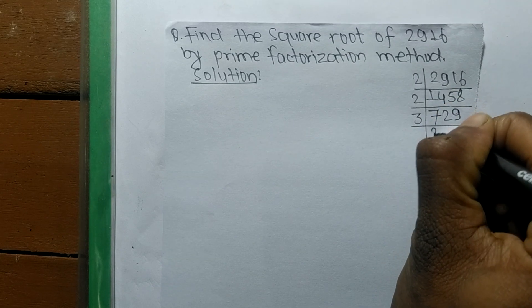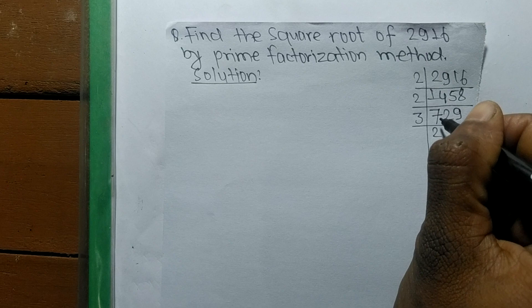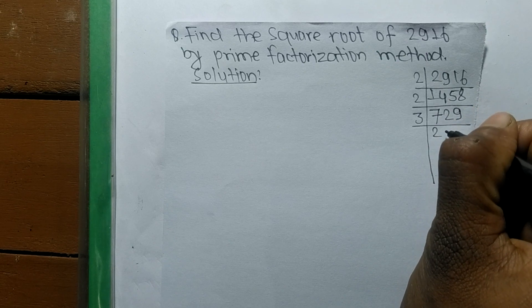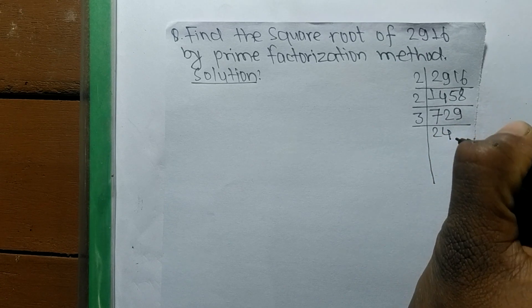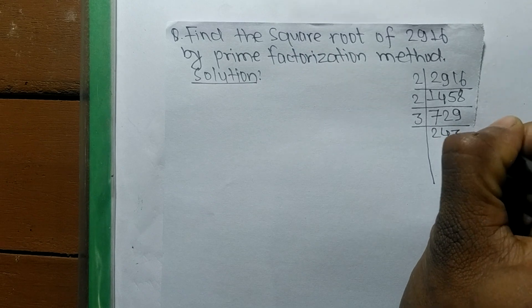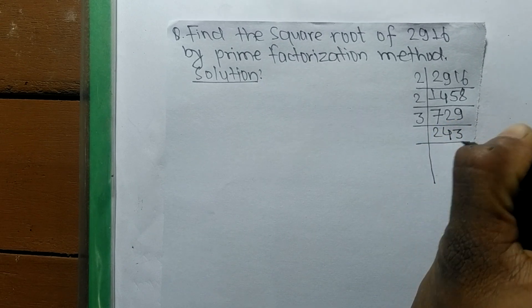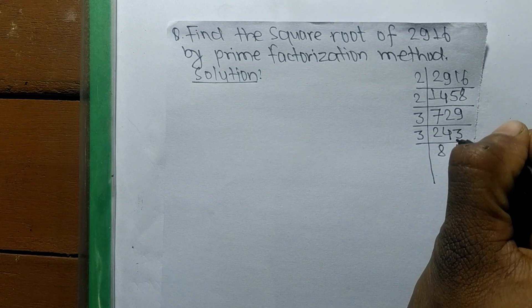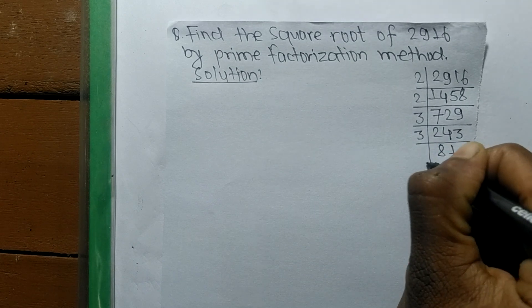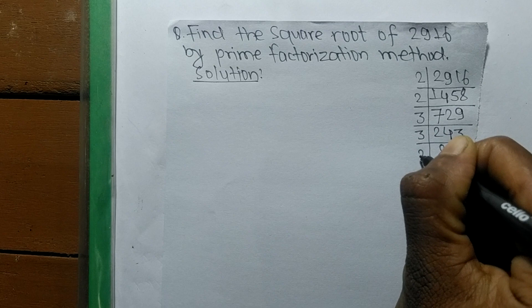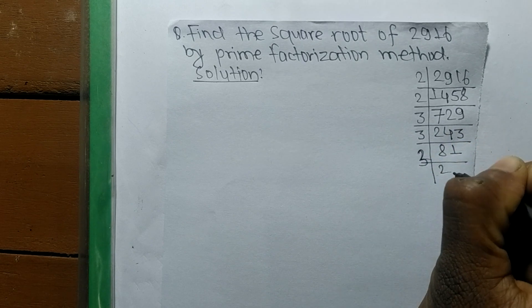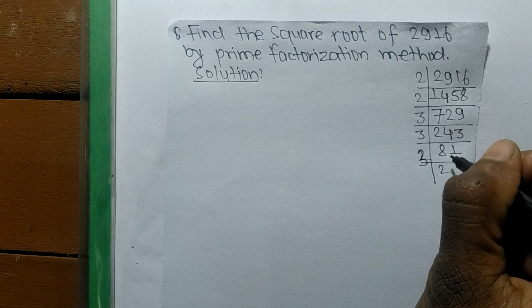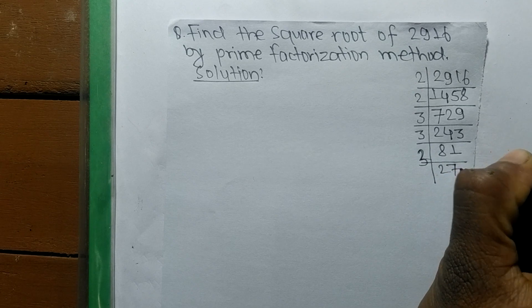So now it is divided by 3. 3 times 2 means 6, remaining is 1, so 1212. 3 times 4 means 12. And 3 times 3 means 9. So again it is 3 times 8 means 24. And 3 times 2 means 6, remaining 21. 3 times 7 means 21.